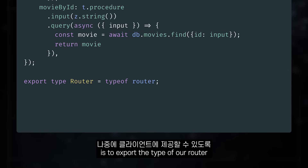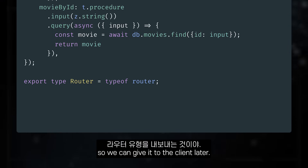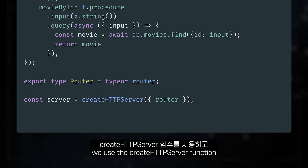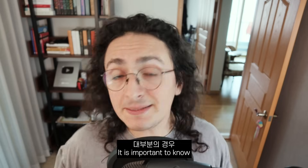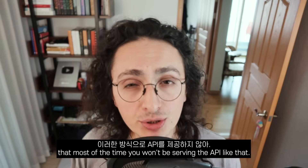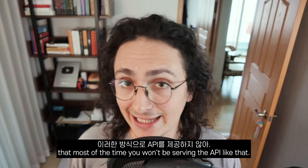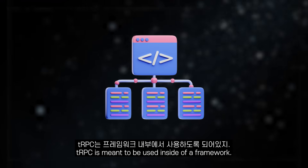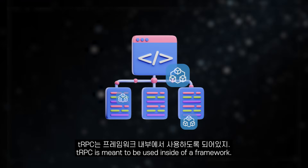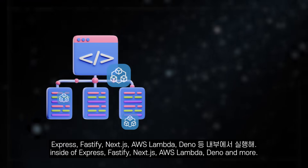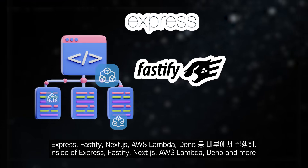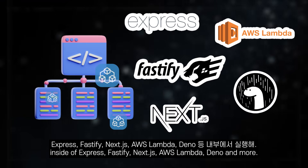The last thing we need to do is export the type of our router so we can give it to the client later. To serve the API we just made, we use the createHTTPServer function and start it on port 3000. It is important to know that most of the time you won't be serving the API like that. tRPC is meant to be used inside of a framework — most of the time you will be using tRPC adapters to run it inside of Express, Fastify, Next.js, AWS Lambda, Deno, and more.